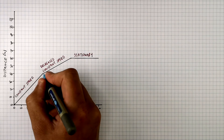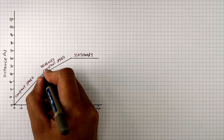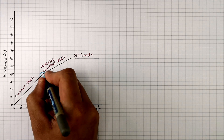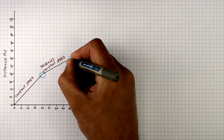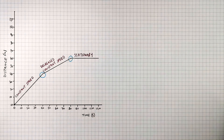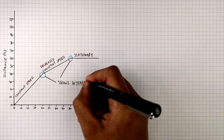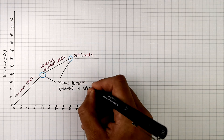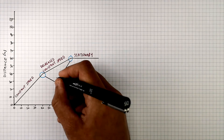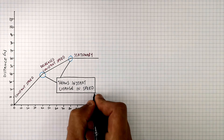So these two parts of the graph that I'm circling show where there is going to be a change in speed. But they show an instant change in speed, and an object will not go from 1 metre per second to 0.5 metres per second instantly.